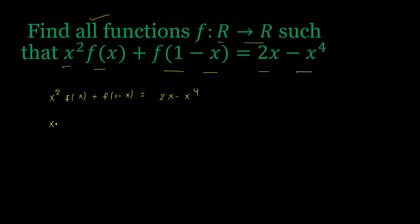First I replace x with 1-x. So (1-x)²f(1-x) + f(x) = 2(1-x) - (1-x)⁴.